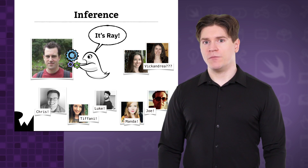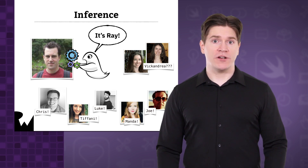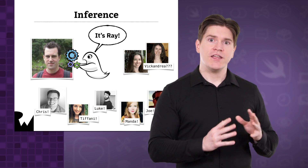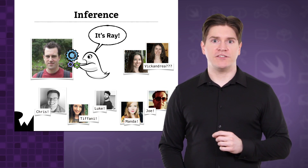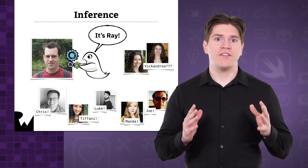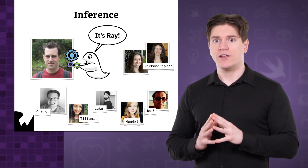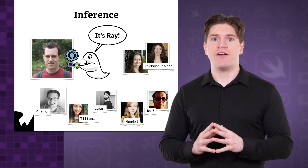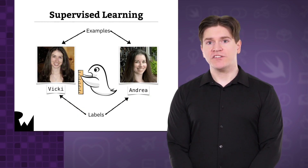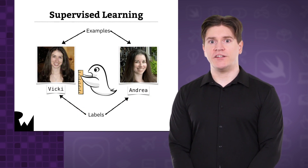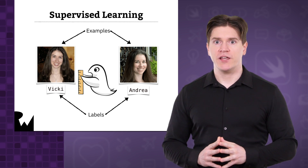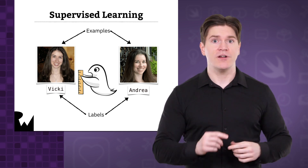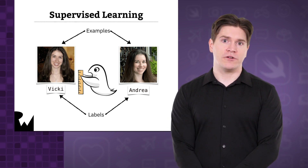Given a new photo that the model has never seen before, you want it to detect your friend's faces and put the right name to the right face. If a model can make correct predictions on data that it was not trained on, we say that it generalizes well. Training models so that they make good predictions on new data is the key challenge of machine learning.